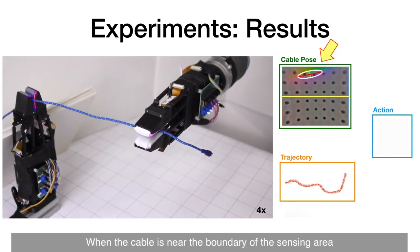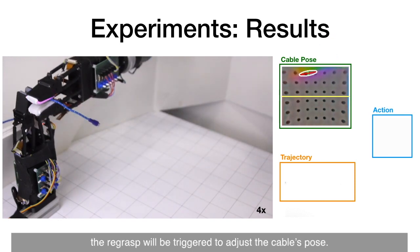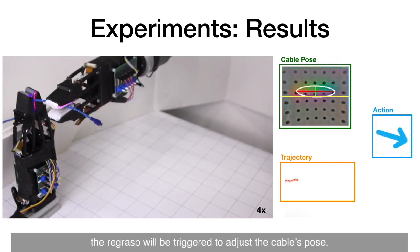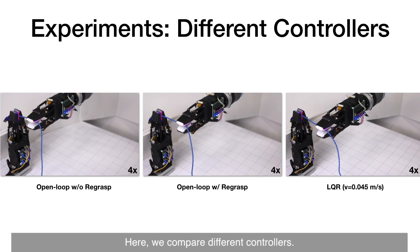When the cable is near the boundary of the sensing area, the re-grasp will be triggered to adjust the cable's pose.